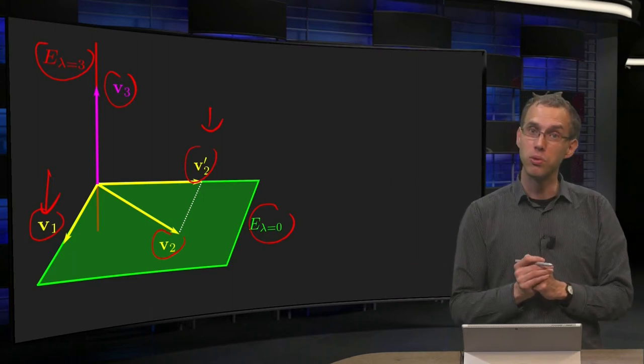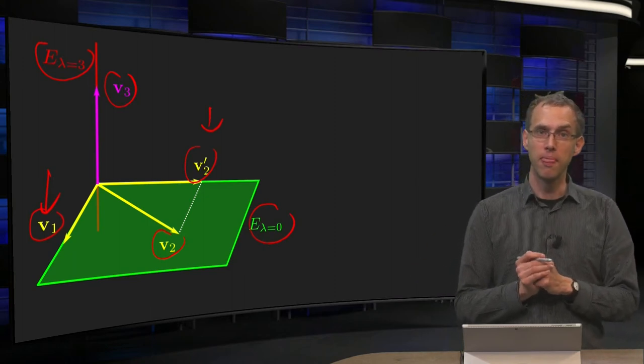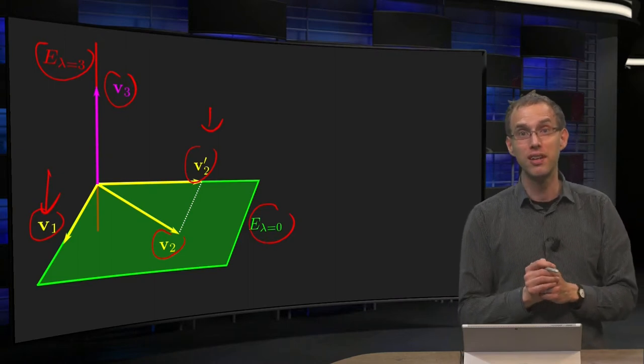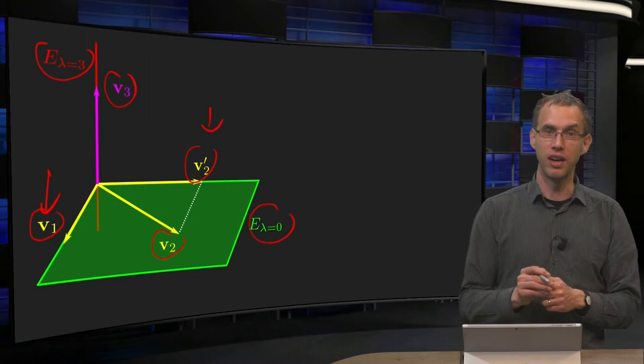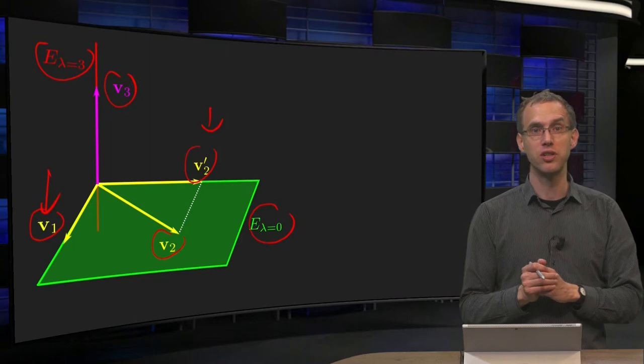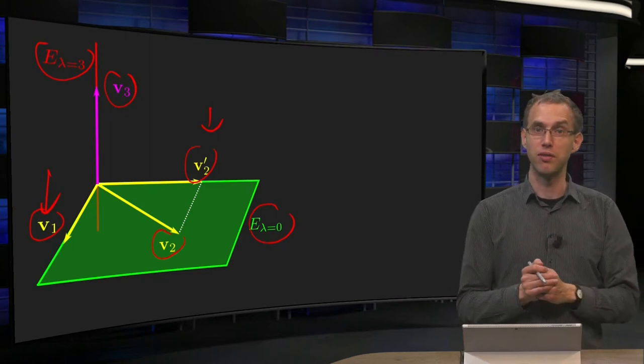Now, how are we going to find this v2 prime? Well, we recognize hopefully the Gram-Schmidt procedure already over here, so we are going to use Gram-Schmidt to form an orthogonal basis of e-lambda equals zero instead of the basis we had.